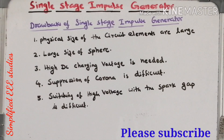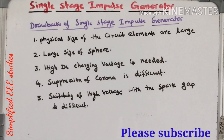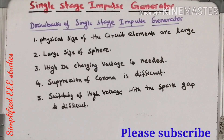These are the drawbacks we can list out. In order to overcome these drawbacks, a multi-stage impulse generator is introduced, known as the Marx circuit, designed by Marx — that is why it is known as Marx generator. That portion will be covered in the next session. Thanks for watching this video. Please share and don't forget to subscribe.